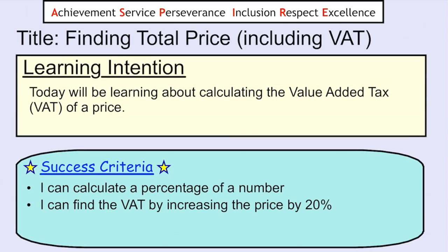Please make sure that you write down the title for today's lesson in your jotters — that's 'Finding Total Price Including VAT'. The learning intention is going to be learning about calculating the value-added tax, or VAT, of a price. The success criteria for today is that I can calculate the percentage of a number, and I can find the VAT by increasing the price by 20%.